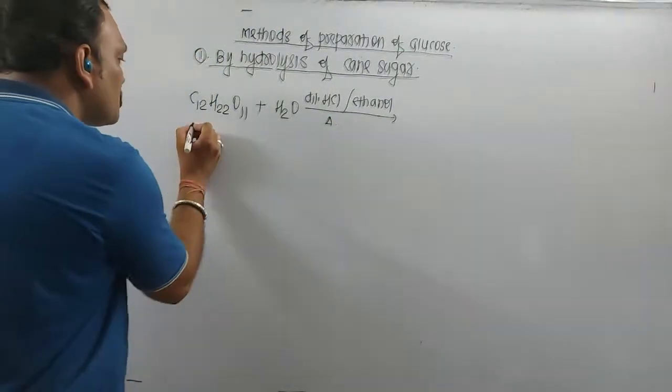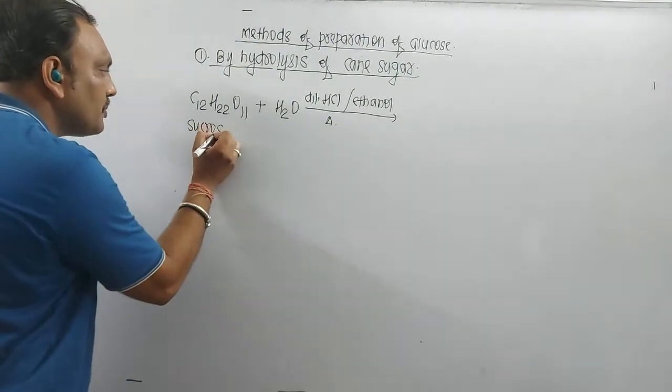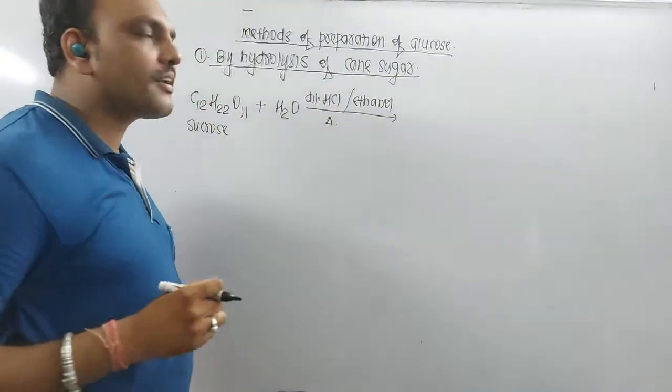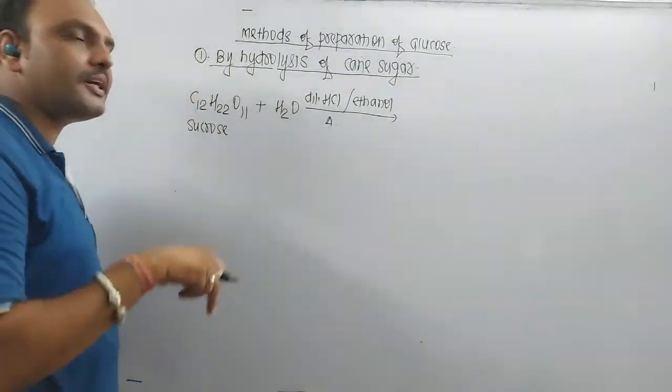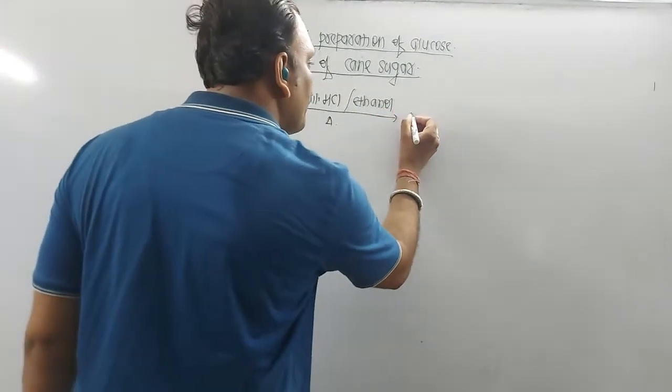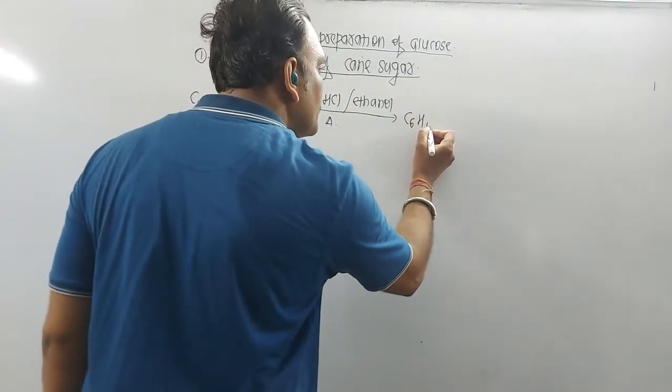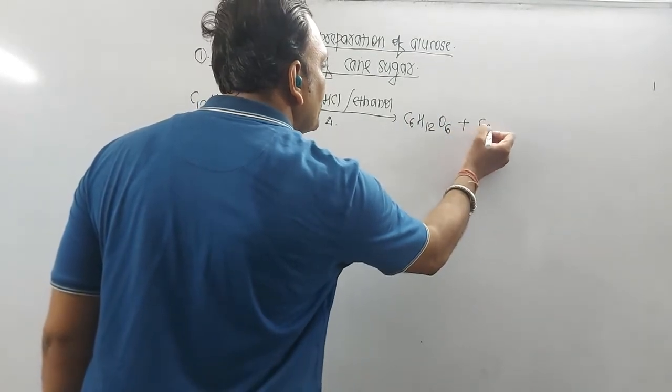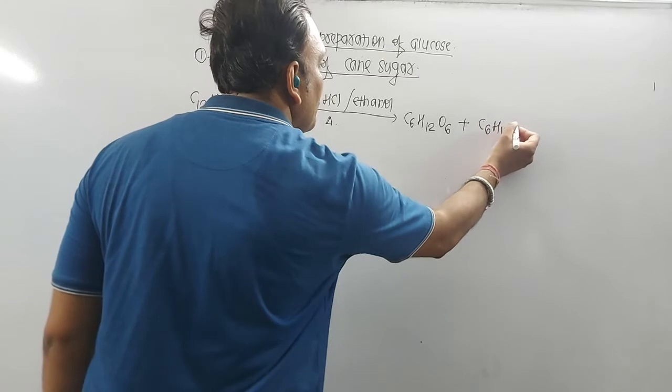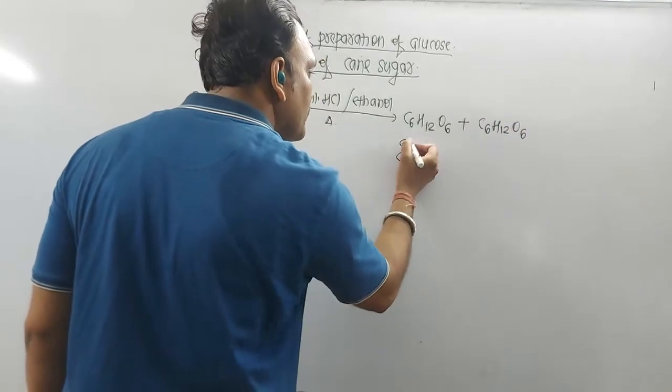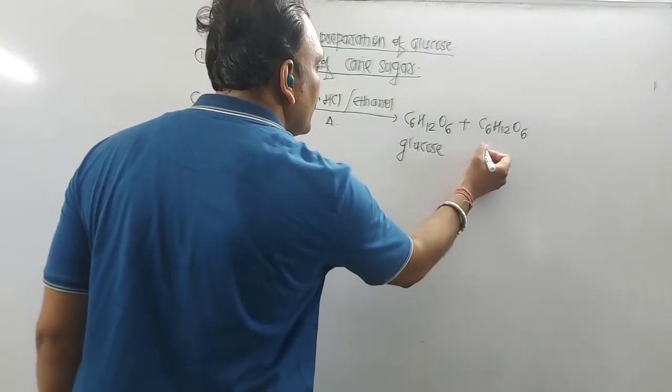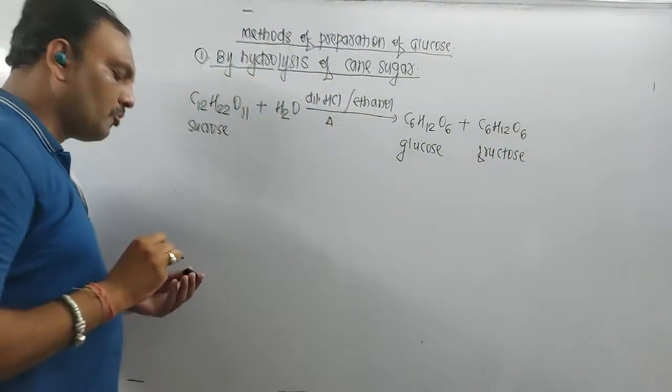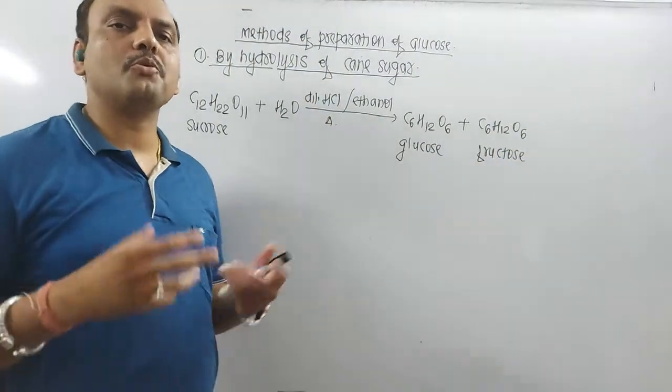When sucrose, which happens to be the disaccharide, is hydrolyzed by using dilute mineral acid like HCl in alcoholic medium, then this sucrose prefers to undergo hydrolysis giving glucose along with fructose. Now remember, this is supposed to be the glucose and this is fructose. So in this manner, mixture of glucose and fructose is obtained.